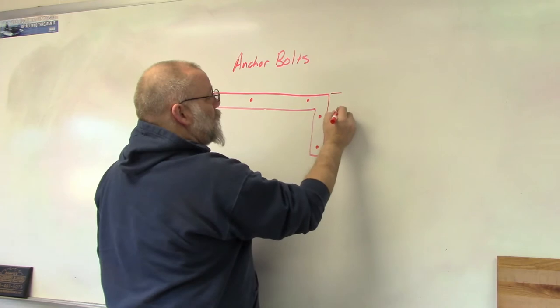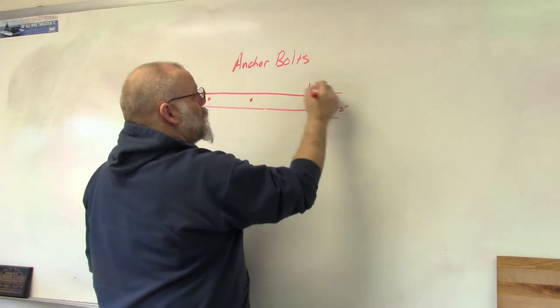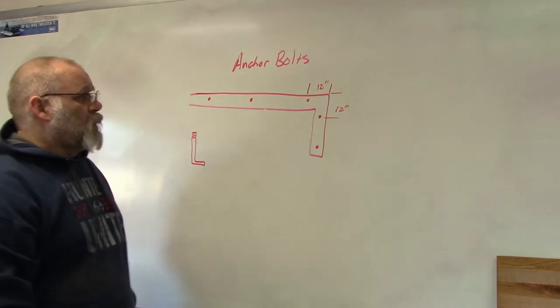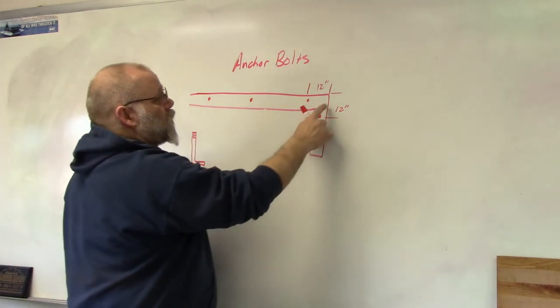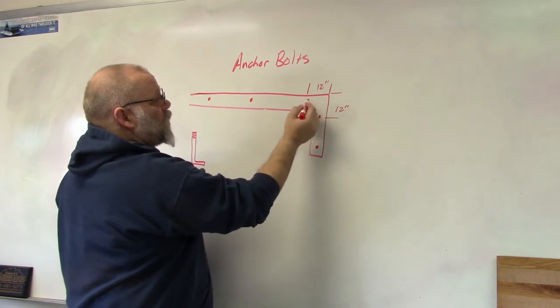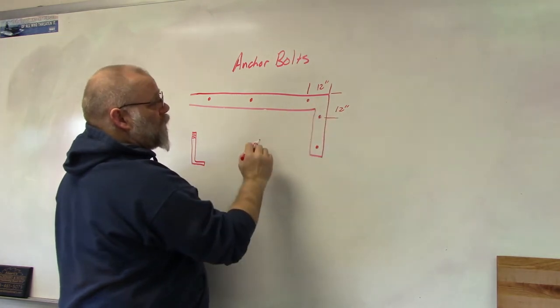Building code says that you need to have an anchor bolt within 12 inches of the corner. So from this corner I measured down 12 inches, I have to have an anchor bolt. And I measure from this corner over, I have to have an anchor bolt.